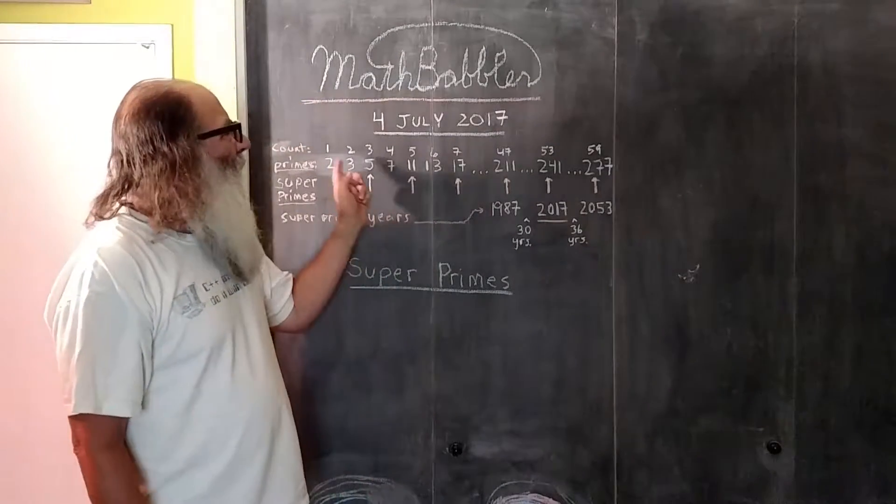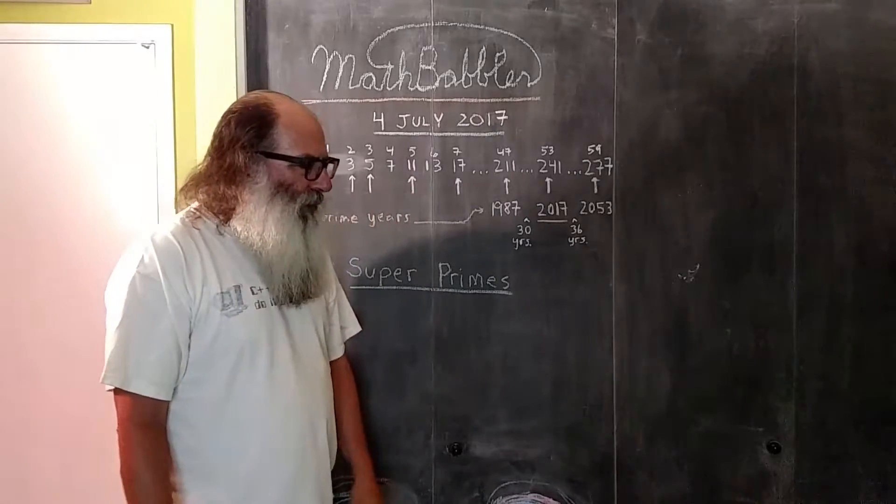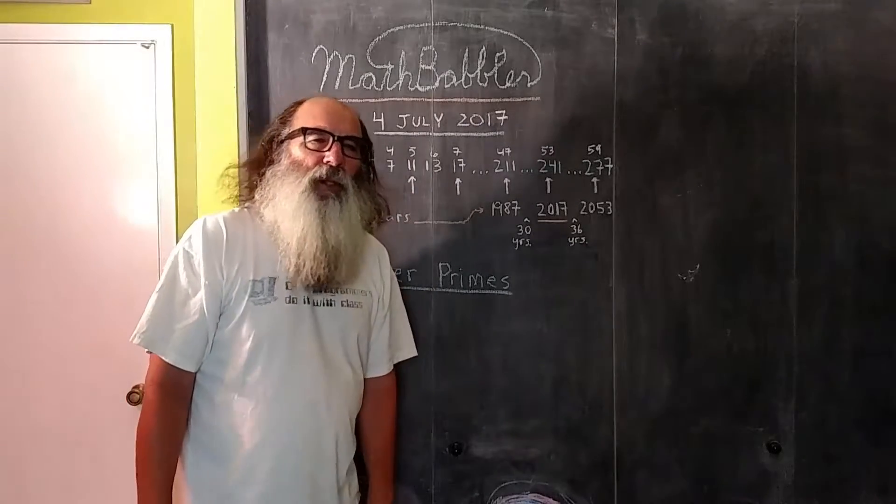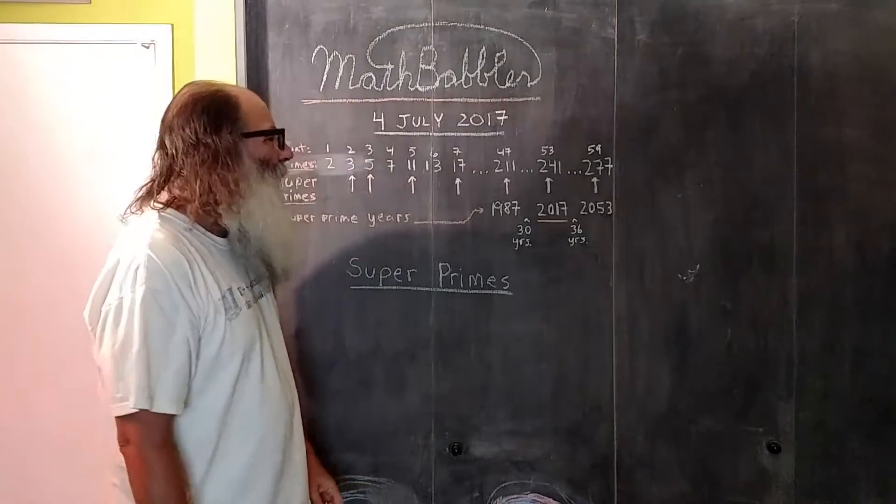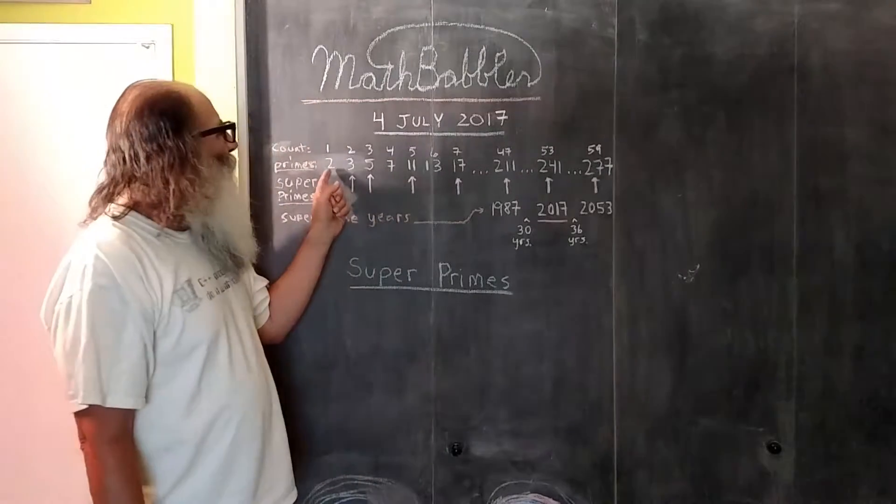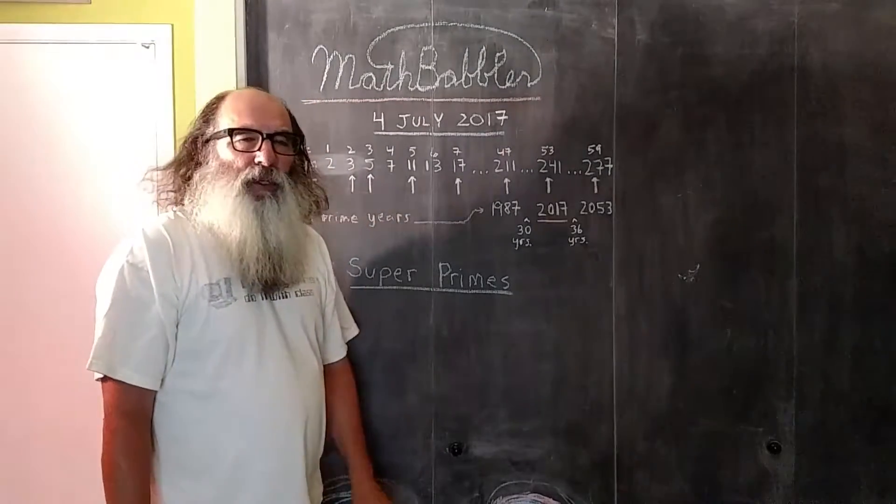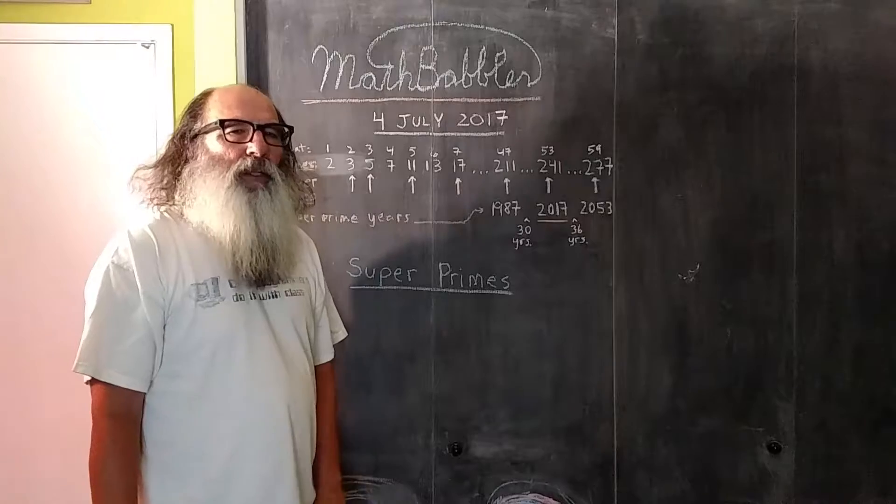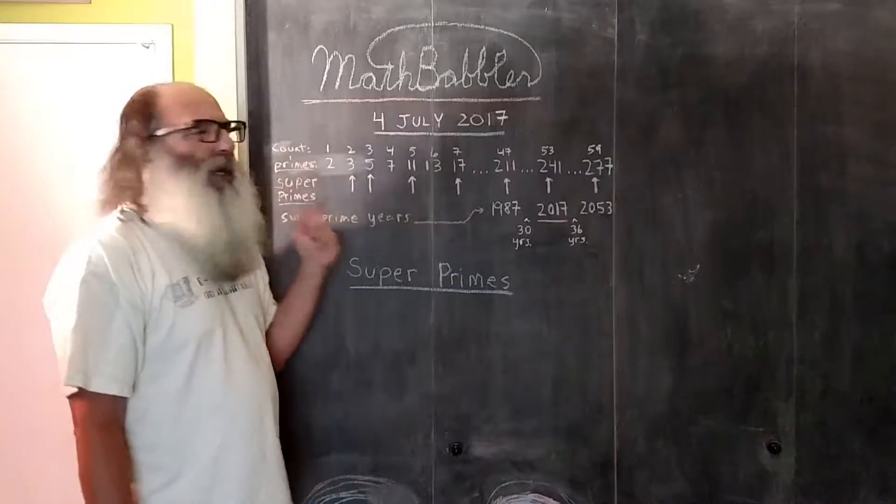What makes a prime number a super prime is if its count in the prime number sequence is a prime number, well then it's a super prime. So for example, 2 is the first prime number. Well, 1 is not prime, so 2 is not a super prime.